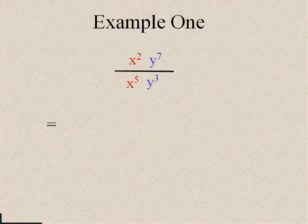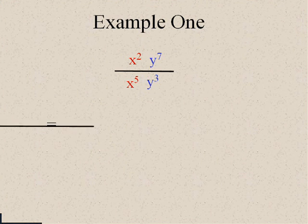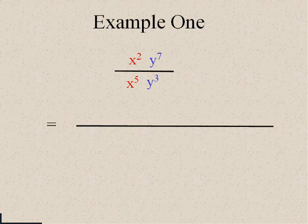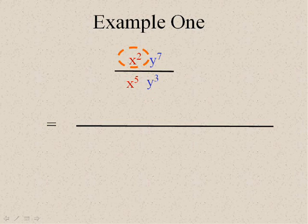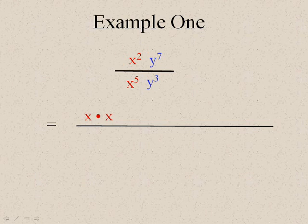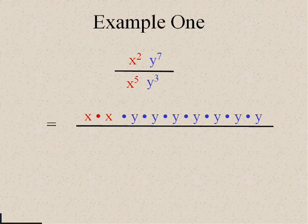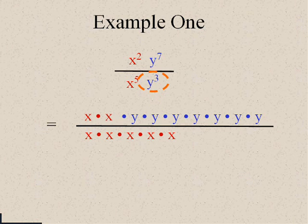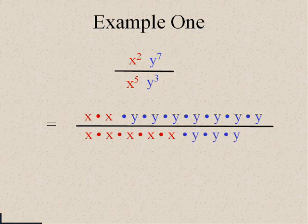Well, in this problem, let's break up each of the expressions and see what they're equal to. And then we'll look for ones. Doesn't x squared really equal two x's multiplied? y to the seventh is seven of them. x to the fifth is five x's. And y to the third is three y's.